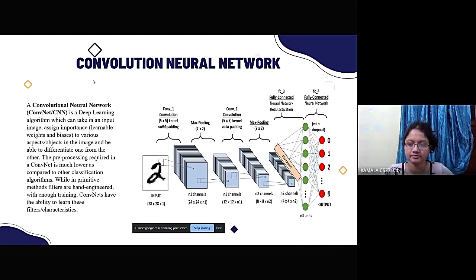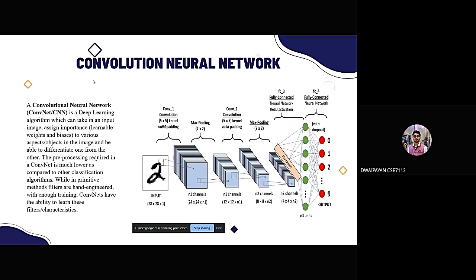We first tried KNN and Random Forest, but found accuracy was not sufficient. We then tried the Convolutional Neural Network by deep learning. At this preliminary phase, we take input, pass it through many layers, extract features, form a fully connected neural network, and then predict the output.